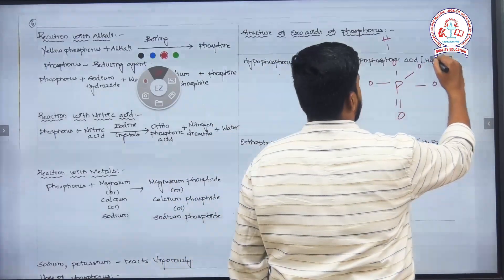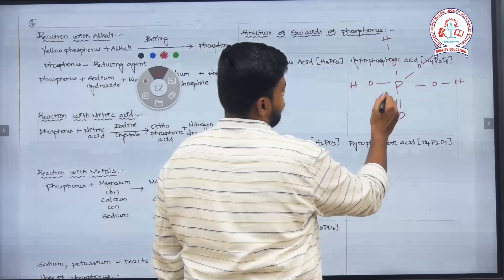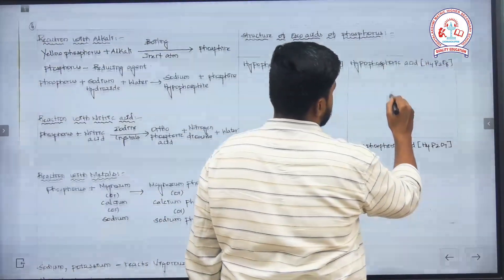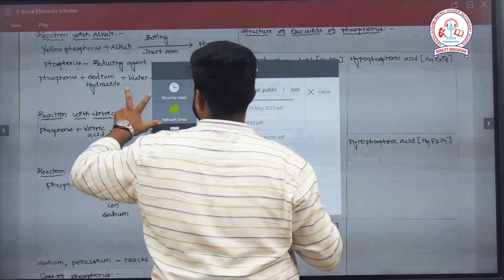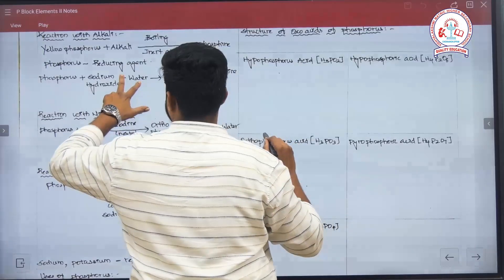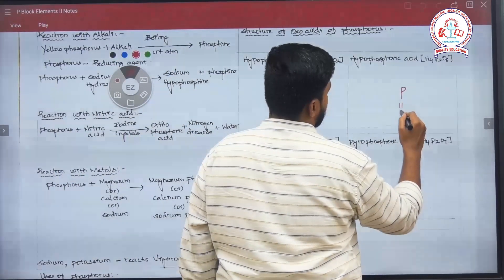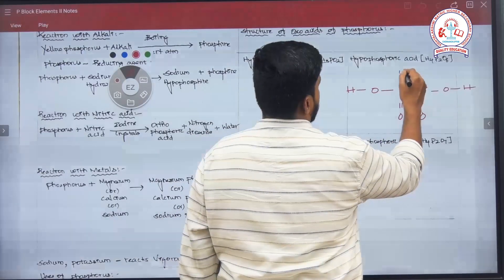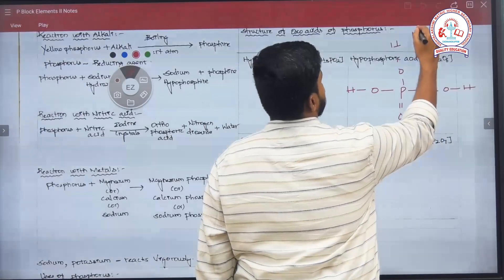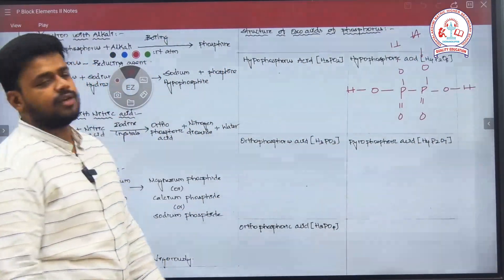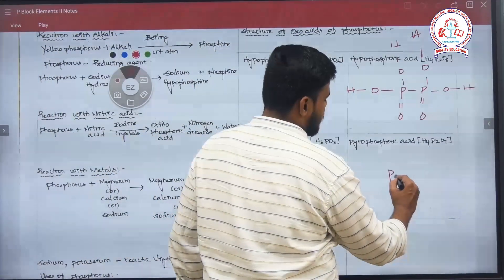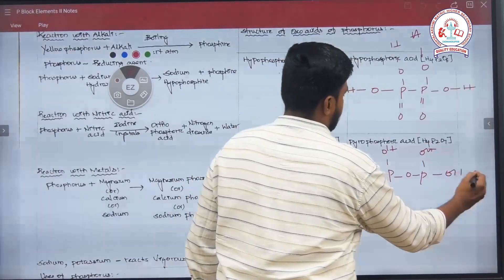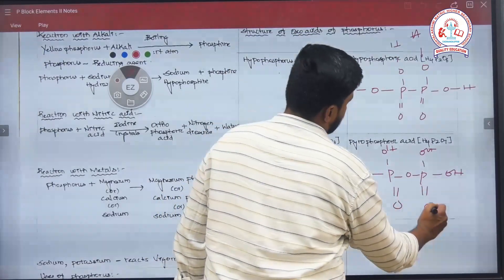Correcting the structure: H4P2O6 has two phosphorus atoms each with P double bond O, connected to each other, with four OH groups total. Then H4P2O7 (pyrophosphoric acid) has two phosphorus atoms with P double bond O each, connected through a bridging oxygen between the phosphorus atoms, with four OH groups — one OH on each side plus the bridging oxygen and the double bond O on each P.